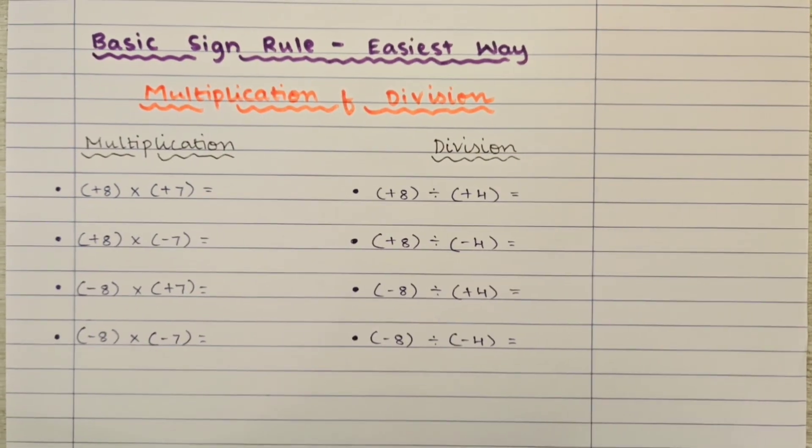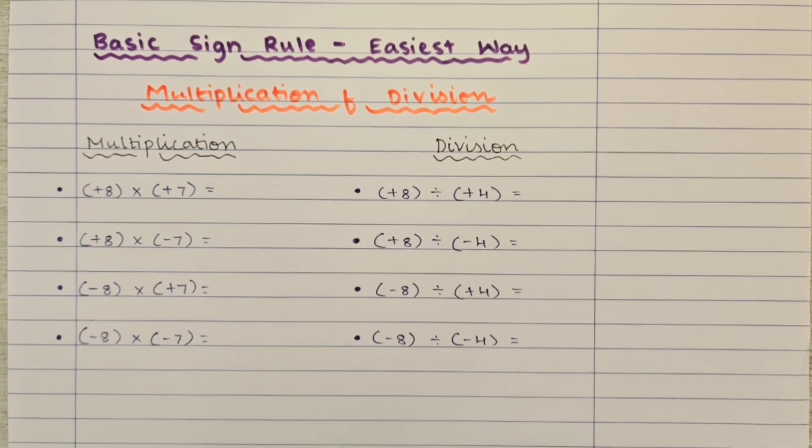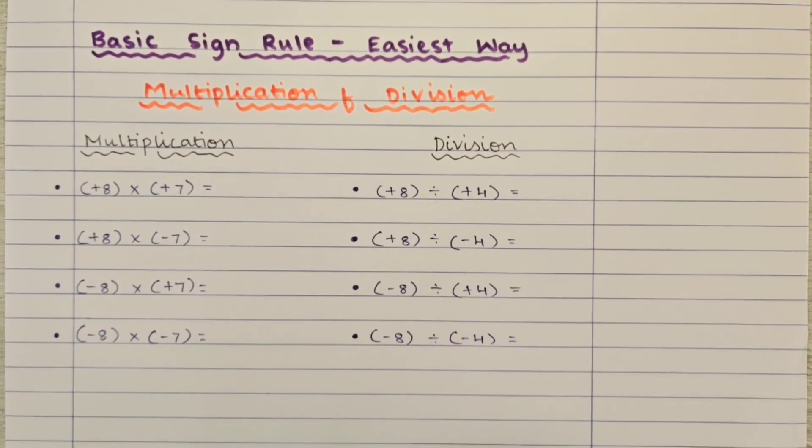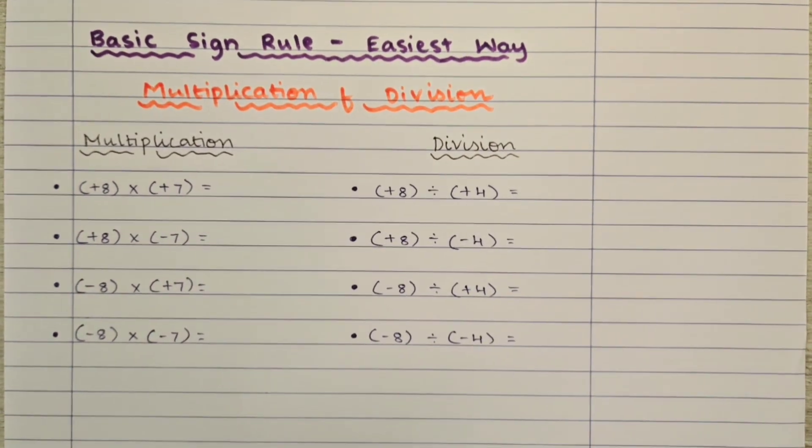We are going to see the basic sign rule in the easiest way for both multiplication and division. To solve this we are going to see with some examples.